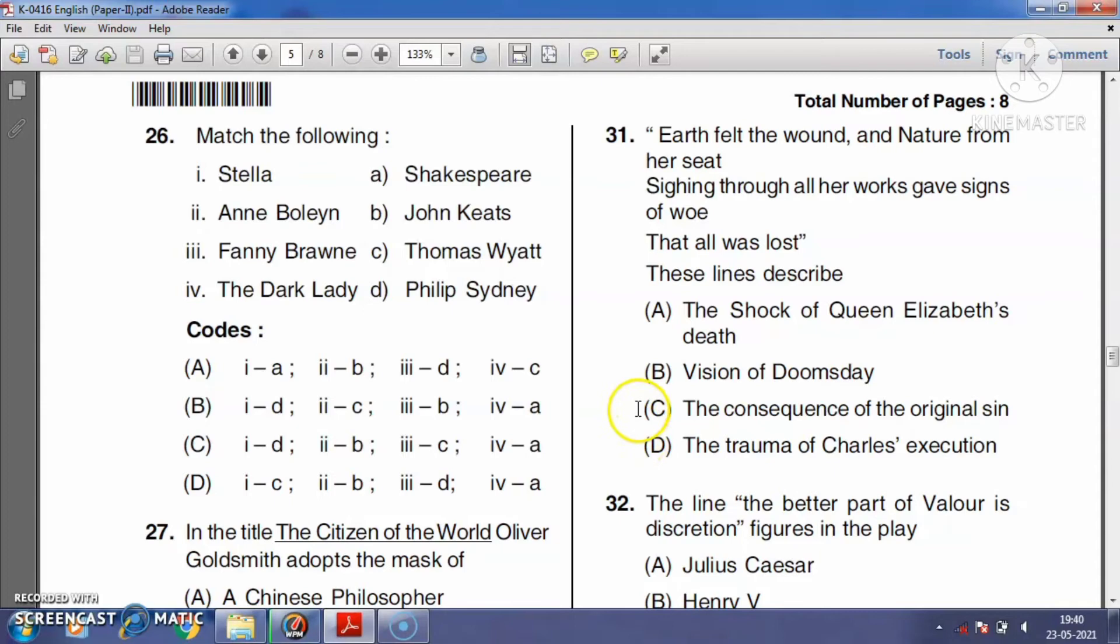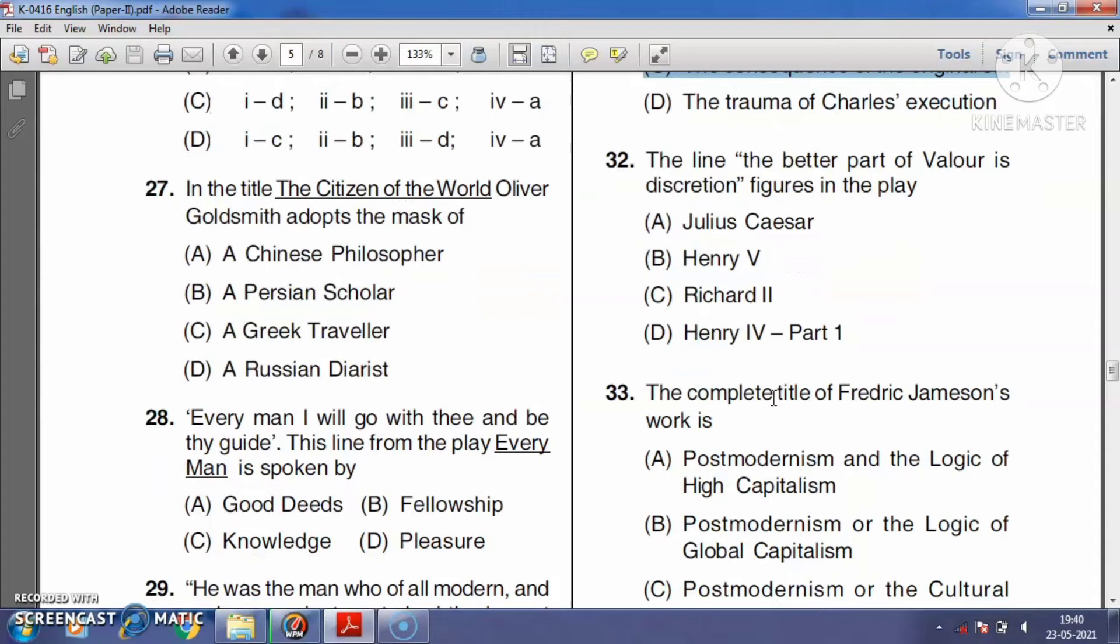Question number thirty-two: The line 'The better part of valor is discretion' figures in the play Julius Caesar, Henry V, Richard II, or Henry IV Part One? The right answer is option D, Henry IV Part One.